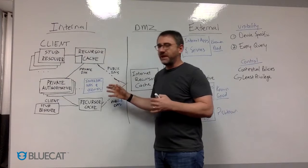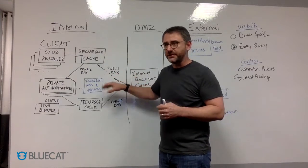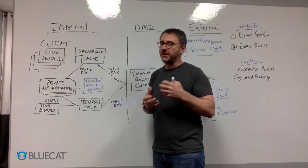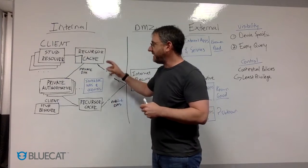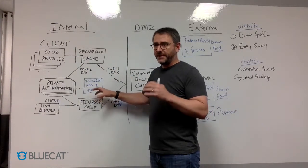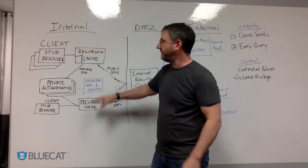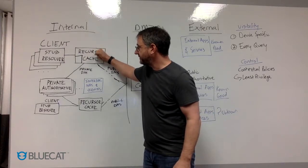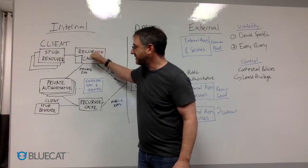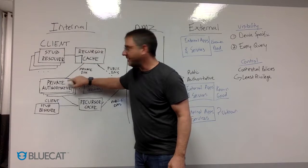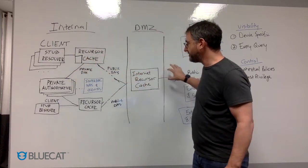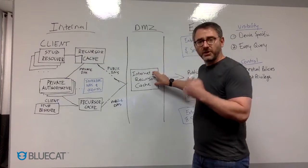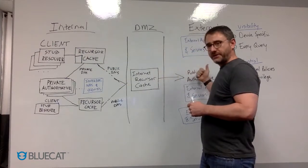Enterprises deploy fairly complex DNS infrastructures to ensure they have survivability and low latency across the enterprise. It can get very complex. At a very basic level, clients query first-hop servers, which tend to direct traffic to where private DNS is, versus recursing out to the internet. Most likely in your DMZ there are recursive servers that are allowed to go to the internet.